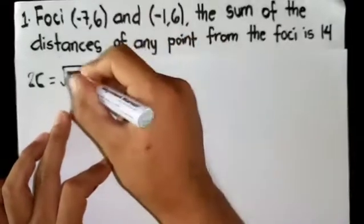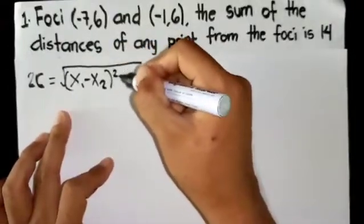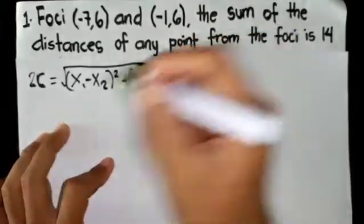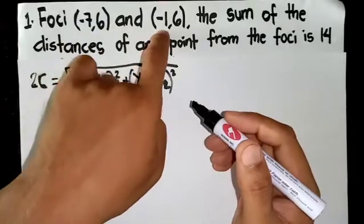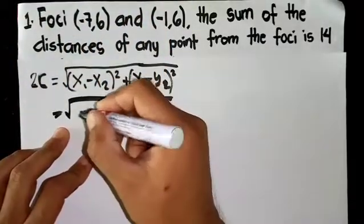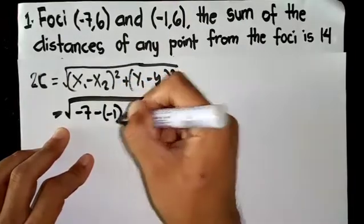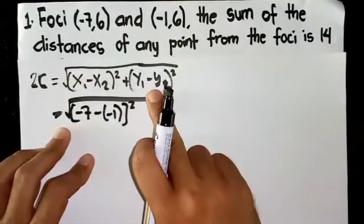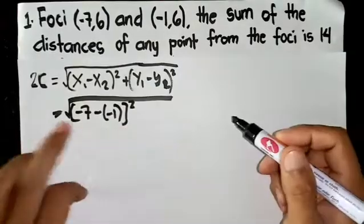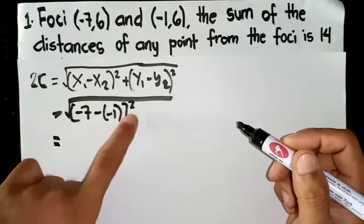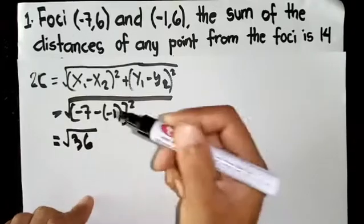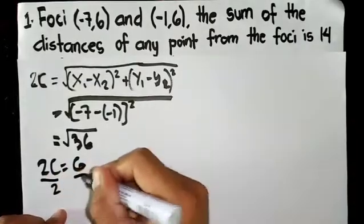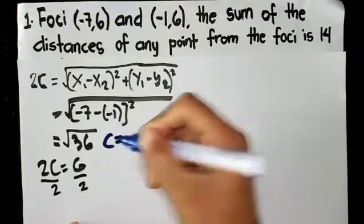What is the distance formula? (x₁ - x₂)² + (y₁ - y₂)². Then substitute the value - either point can be point 1. The result is the same. So -7 minus -1, then square it. I won't write the y₁ y₂ value because it will become zero anyway. So -7 plus 1, which is -6 squared, equals positive 36, or the result is square root of 36. So 2c is 6. Then divide both sides by 2. So obviously, c is 3.